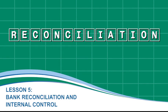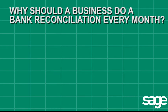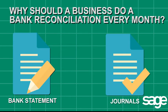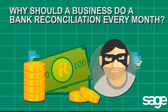Our topic in this Sage Pastel accounting lesson is Bank Reconciliation and Internal Control. A common question asked in accounting exams is, why should a business do a bank reconciliation every month? Consider this question while you listen to the following information. South African companies are worried about the increase in white-collar crimes as well as blue-collar crimes.